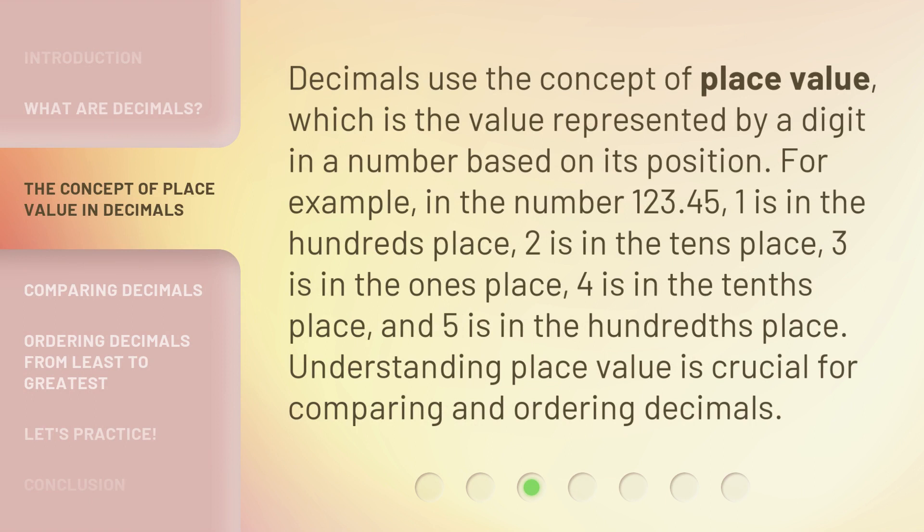Decimals use the concept of place value, which is the value represented by a digit in a number based on its position. For example, in the number 123.45: 1 is in the hundreds place, 2 is in the tens place, 3 is in the ones place, 4 is in the tenths place, and 5 is in the hundredths place. Understanding place value is crucial for comparing and ordering decimals.